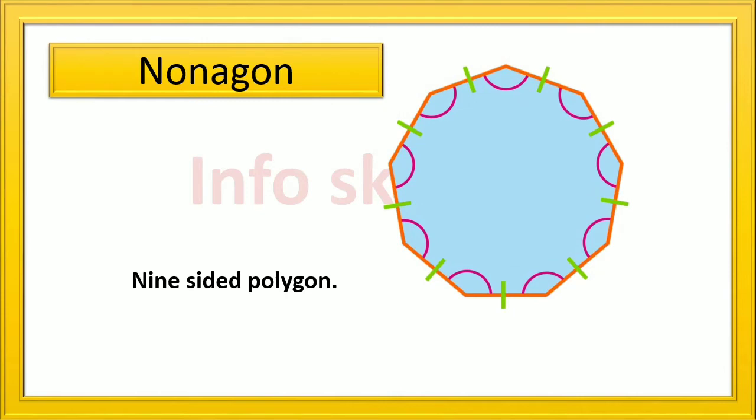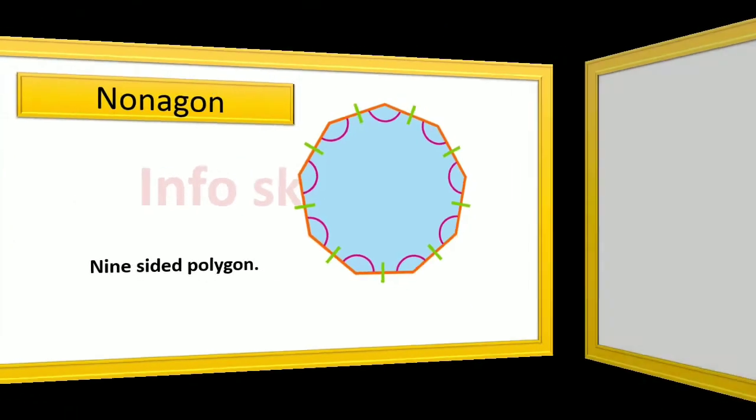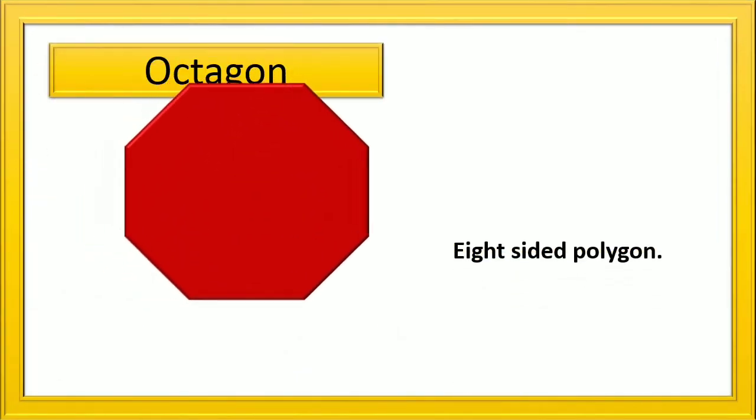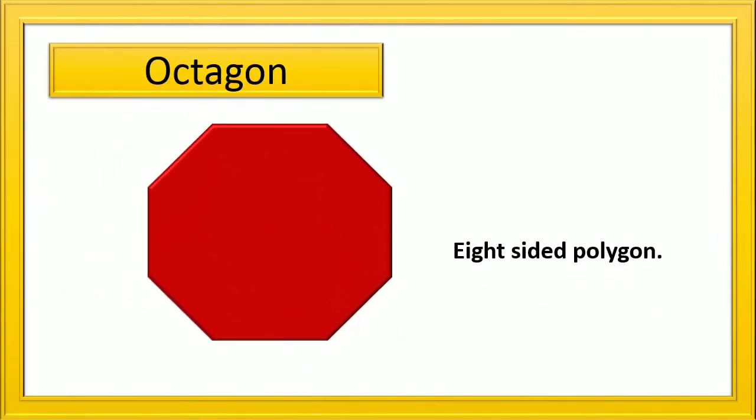Nonagon: it has nine sided polygon. Octagon: it has eight sided polygon.